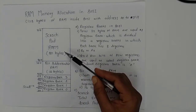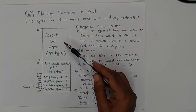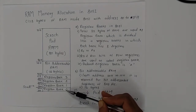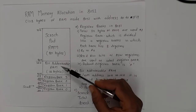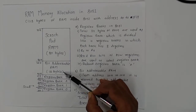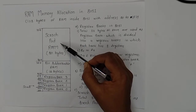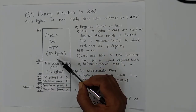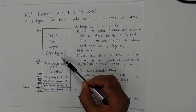The first part is the register bank, which has 32 bytes. Above that we have bit-addressable RAM, which is 16 bytes. The third part is scratchpad RAM, which has 80 bytes.